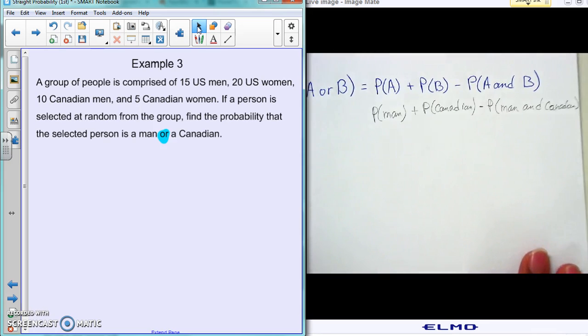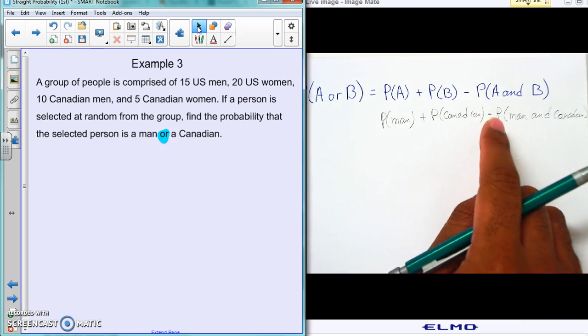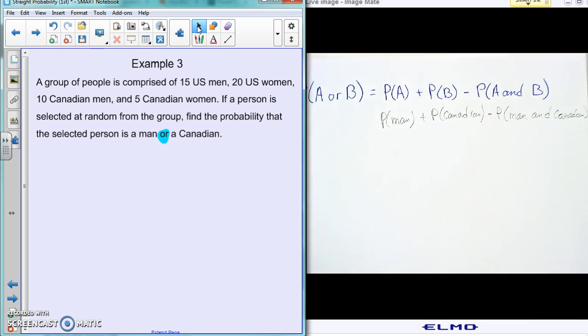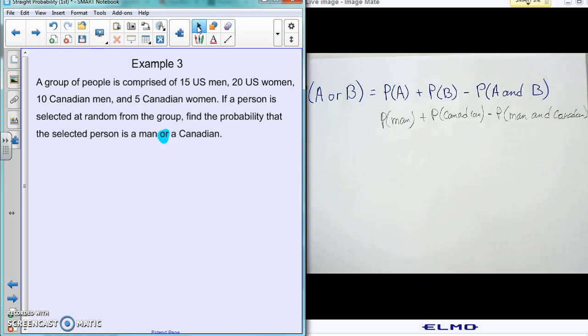So that's what we're talking about: probability of a man plus probability of Canadian minus probability of being a man and a Canadian. Hopefully you guys can read that - that's what it says in the back.